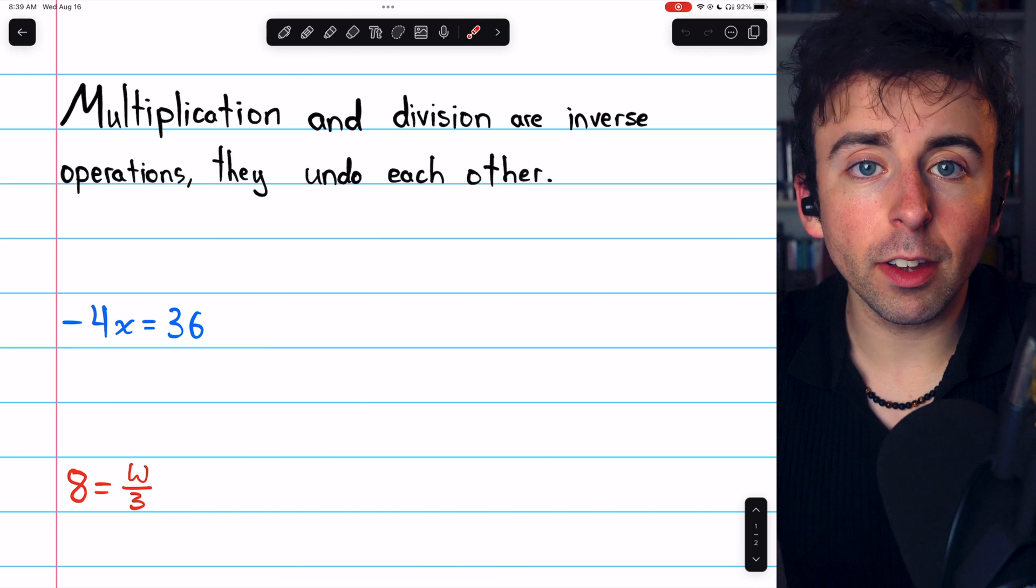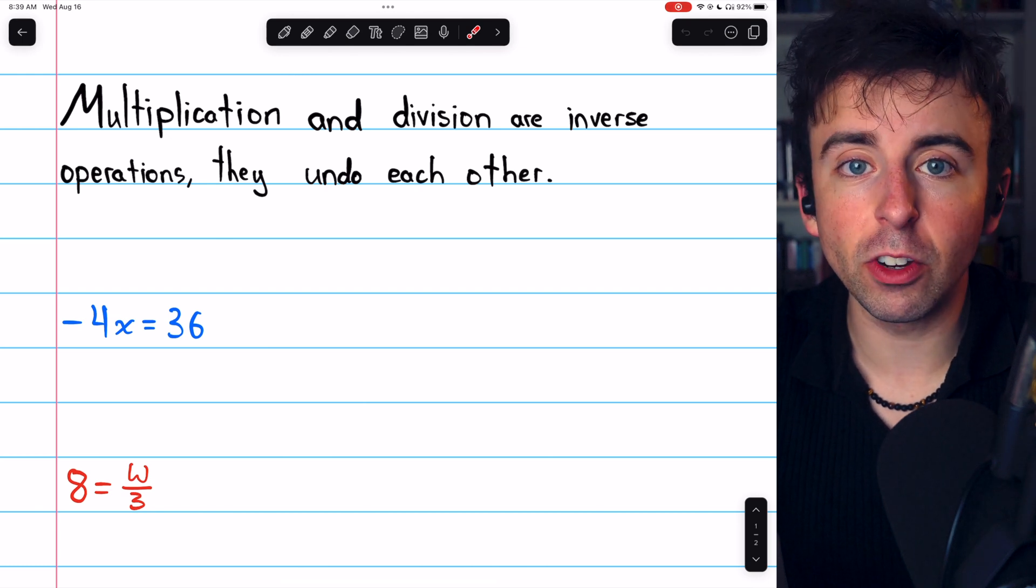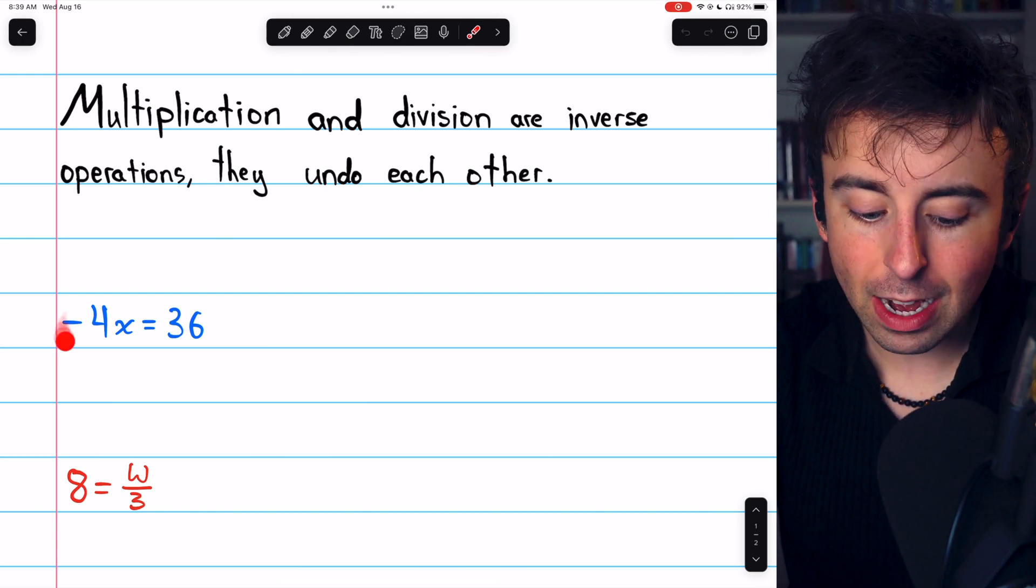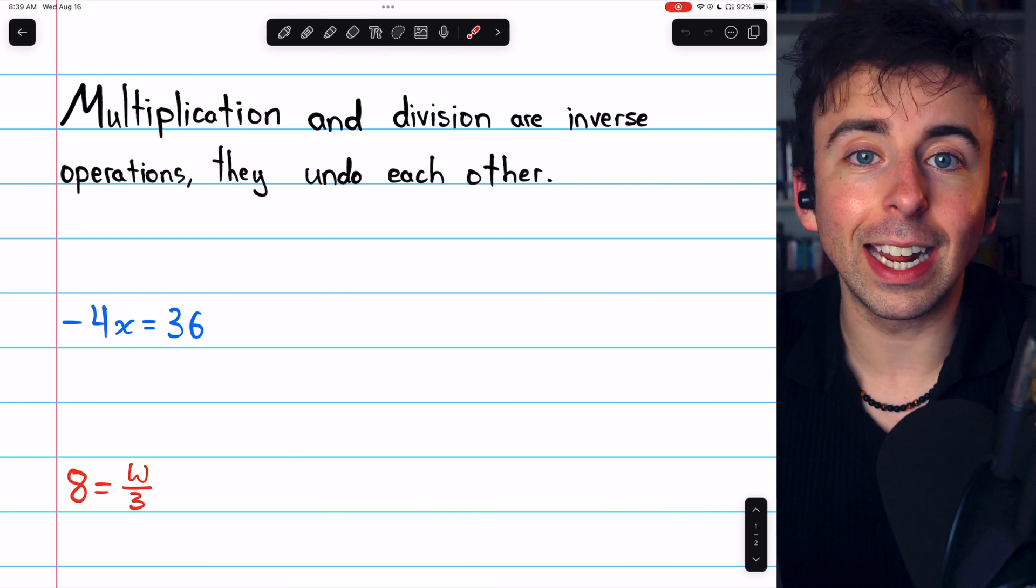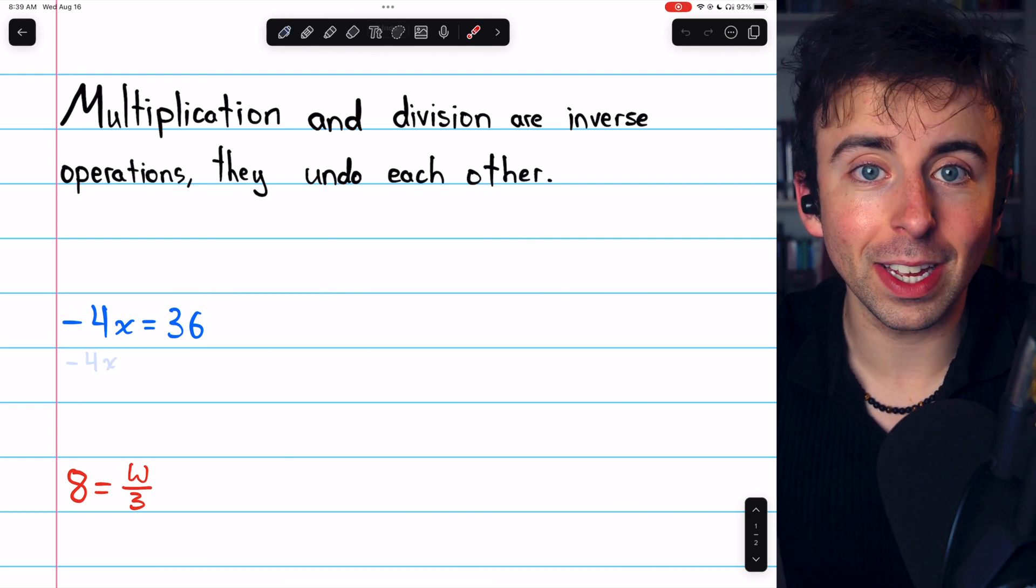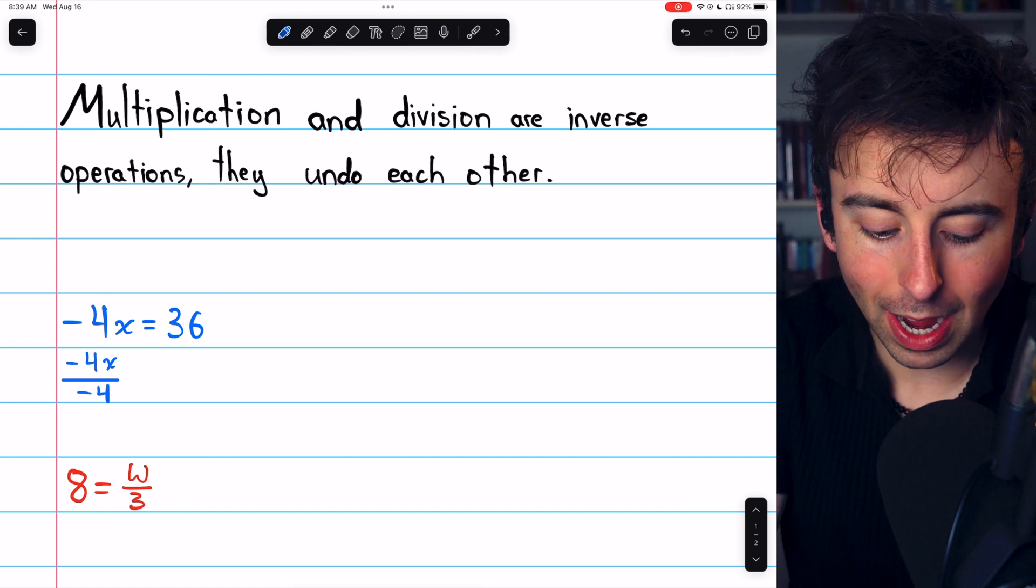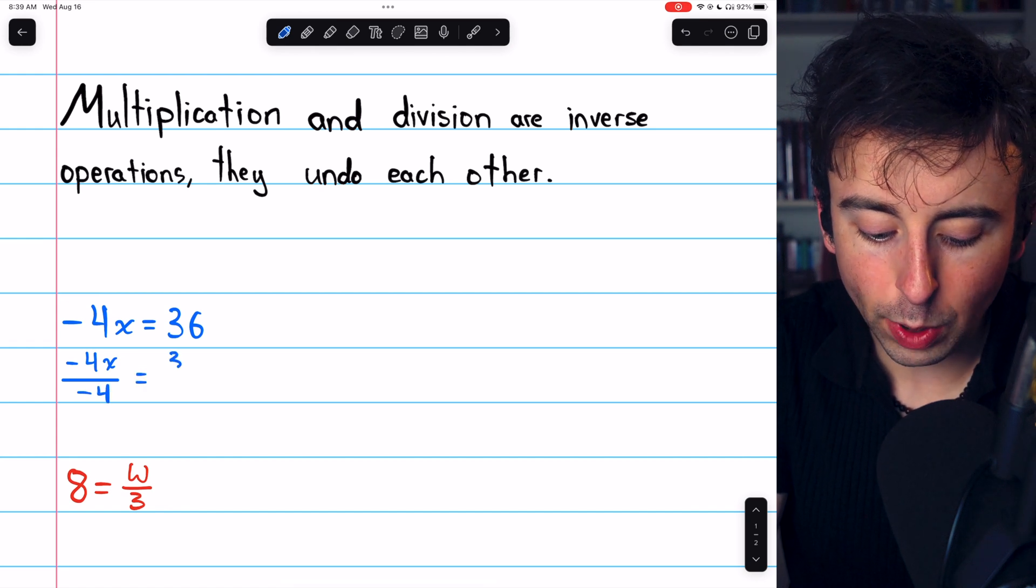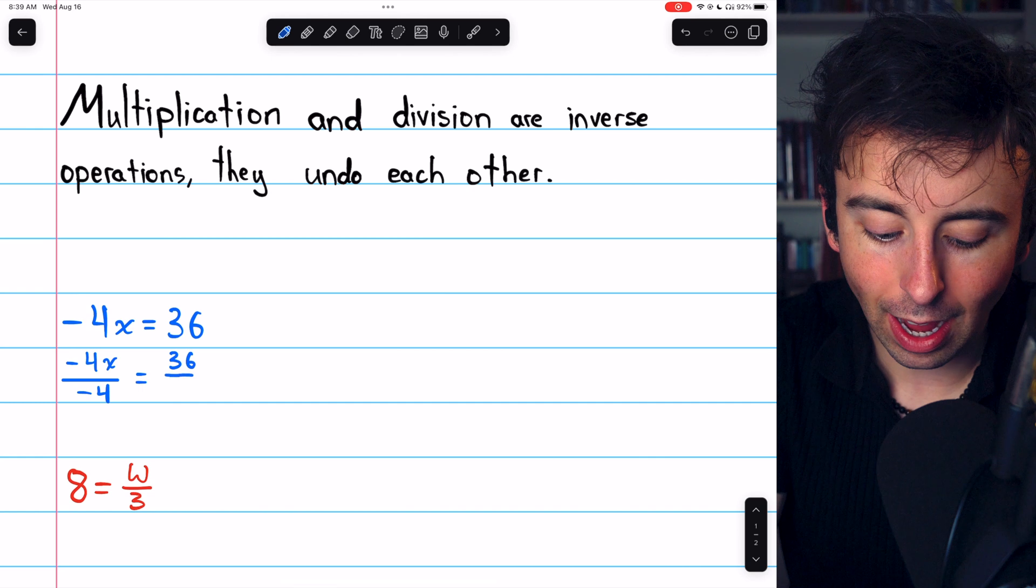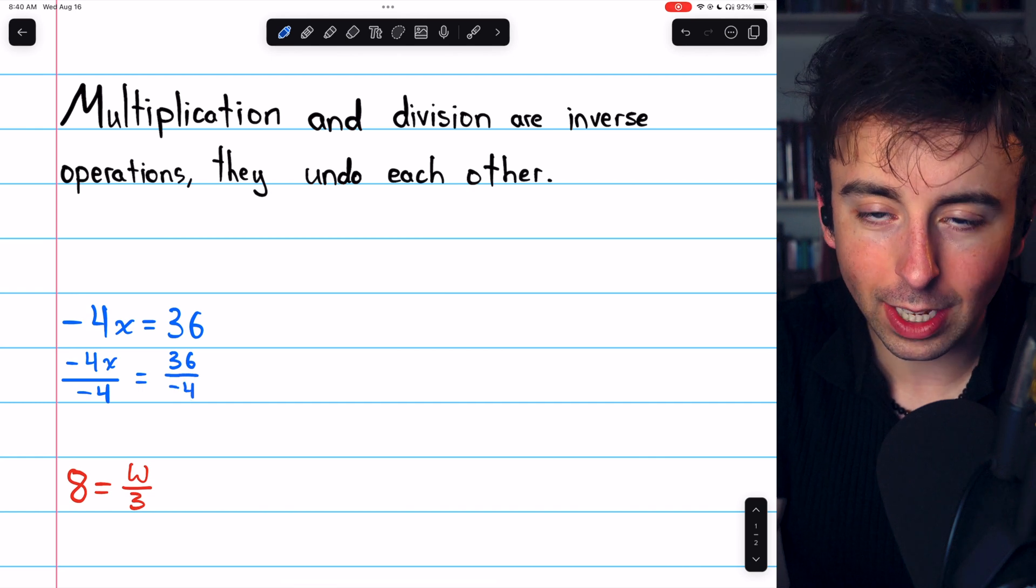But the inverse of multiplication is division. So if we divide both sides of this equation by negative 4, we will solve it. So the left side, negative 4x, will divide by negative 4. But of course, we need to do this to the right side of the equation as well in order to keep it balanced.